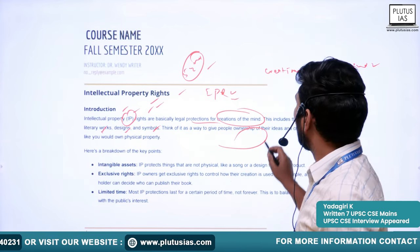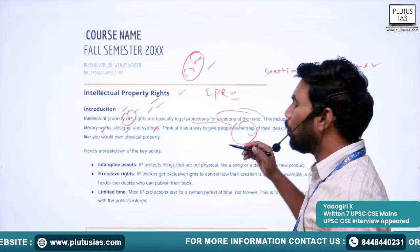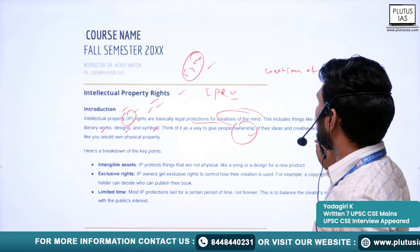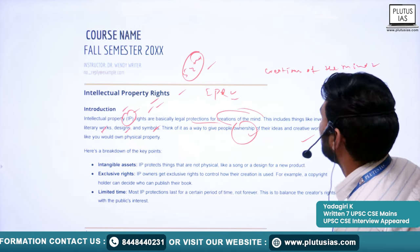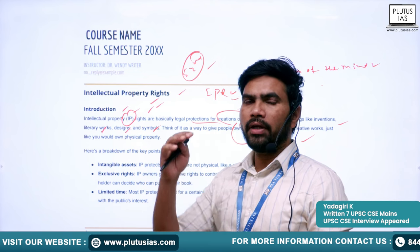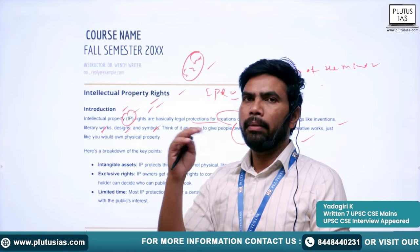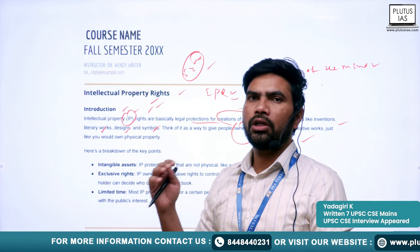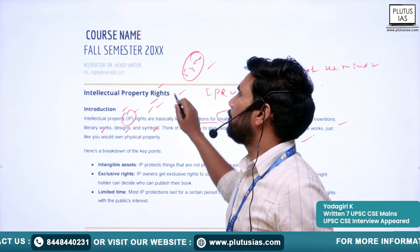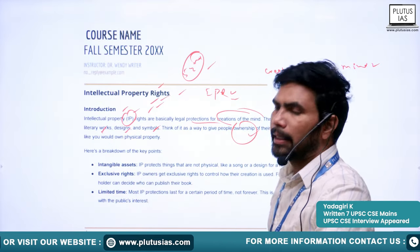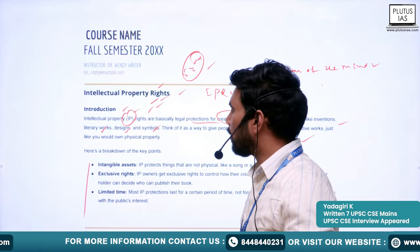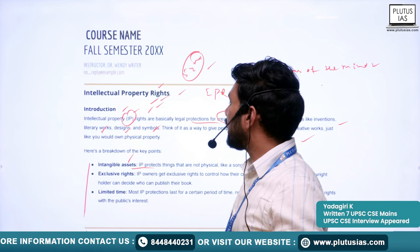IPR is a way of recognizing people's ownership of their own creations. Just like we own physical property, we recognize the creation of the mind by a particular person and confer ownership to that person through intellectual property rights. The major important point is that IPR deals with intangible assets.